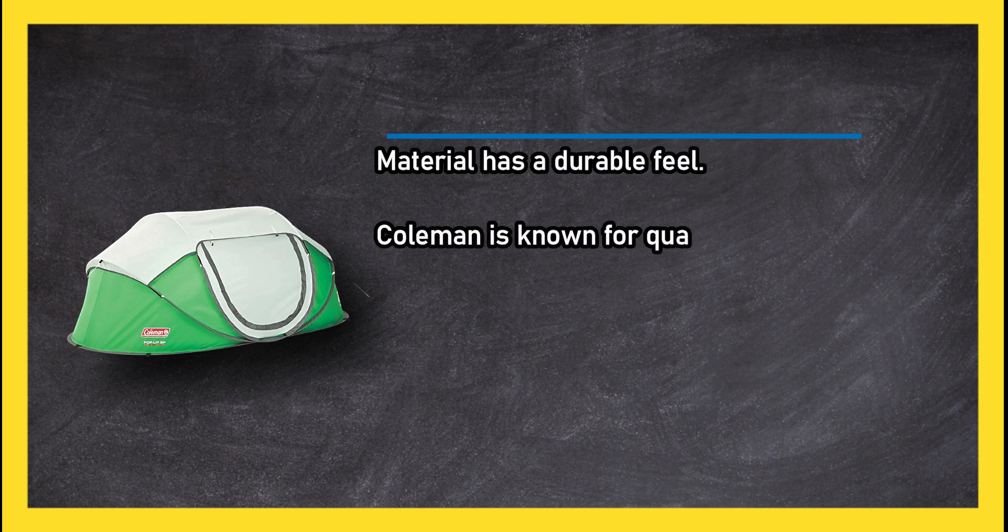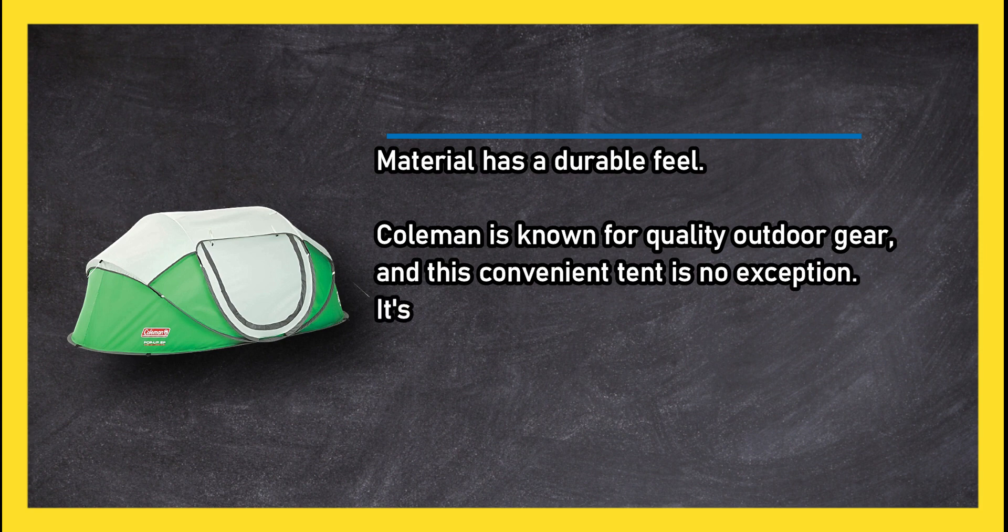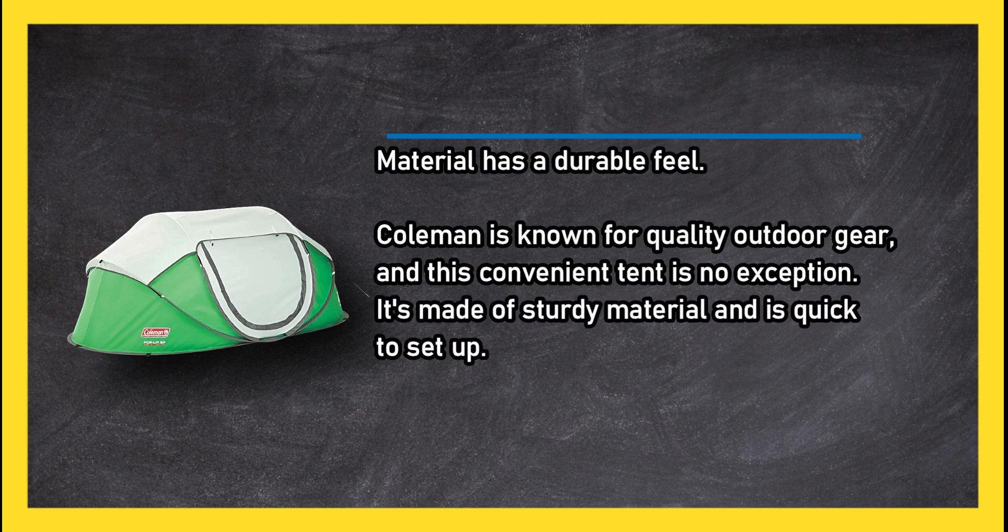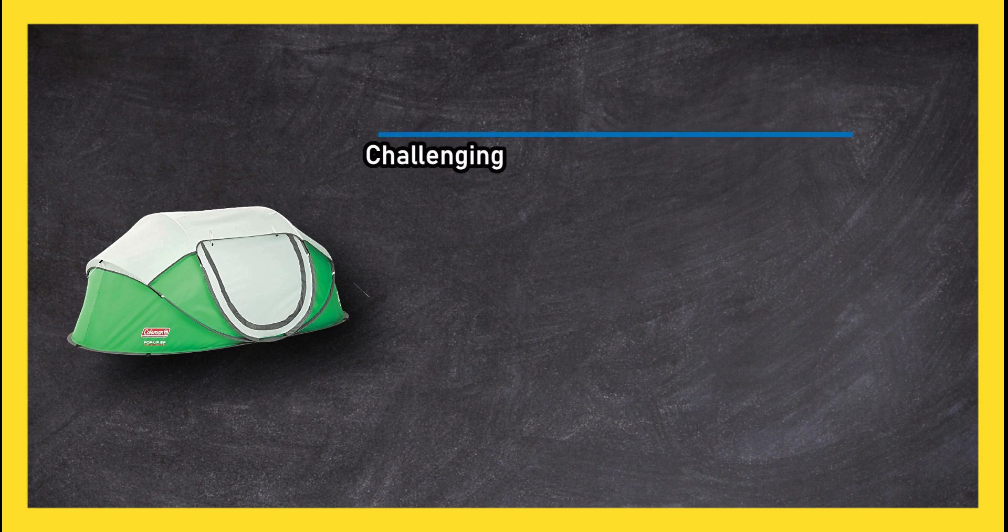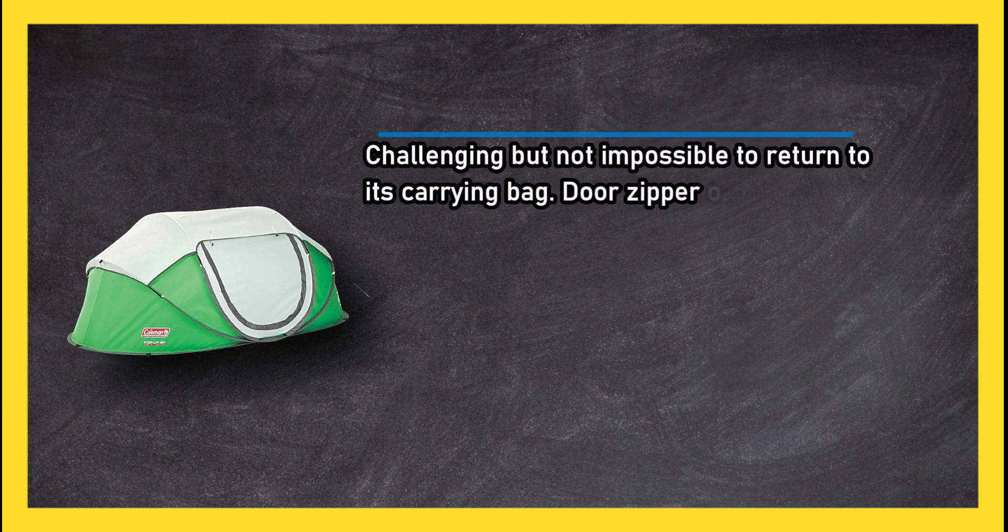Material has a durable feel. Coleman is known for quality outdoor gear, and this convenient tent is no exception. It's made of sturdy material and is quick to set up. Challenging but not impossible to return to its carrying bag. Door zipper occasionally sticks, malfunctions, or breaks.